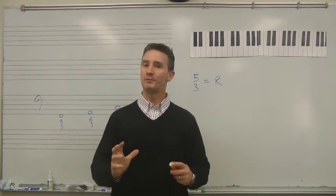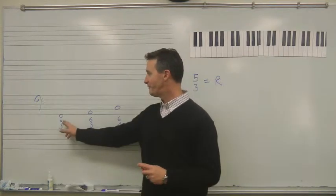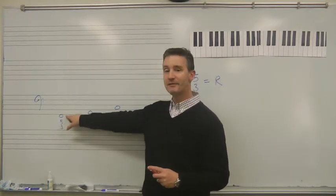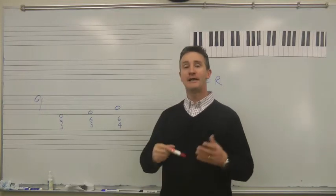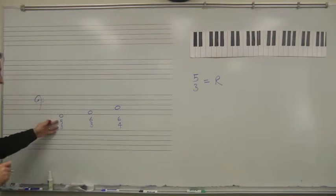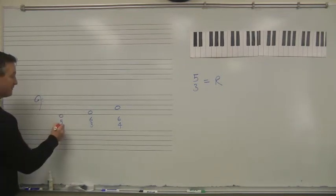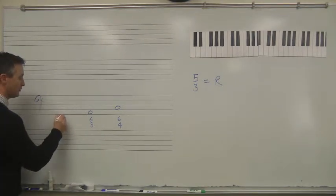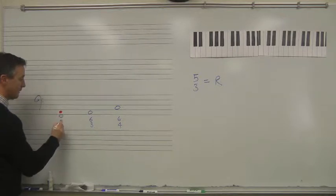Last time we talked about root position and we observed that if you have 5-3 under any given note, that creates a triad in root position, because if I count up those interval distances, a fifth and a third, by count of a third, 1-2-3, it gives me this note.